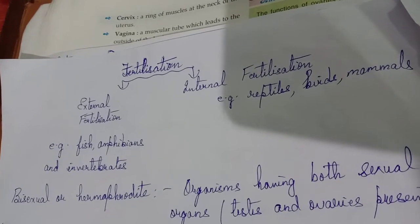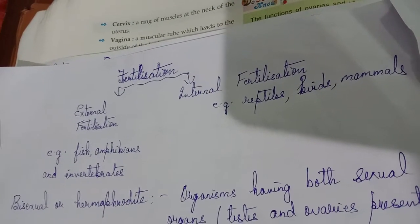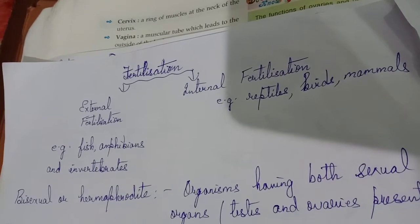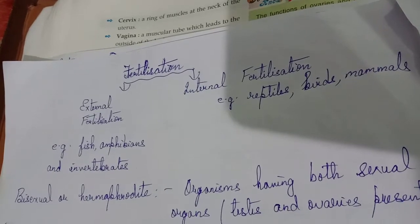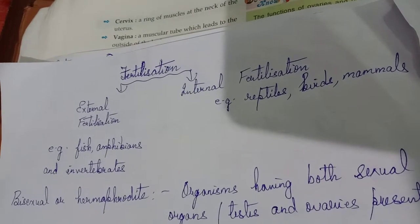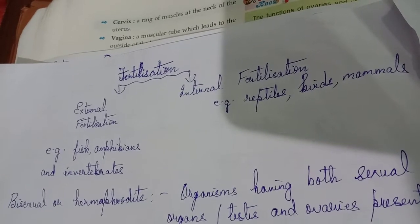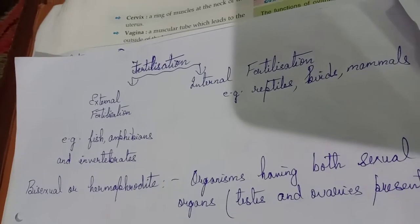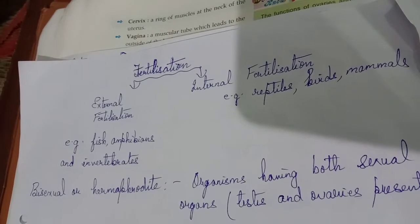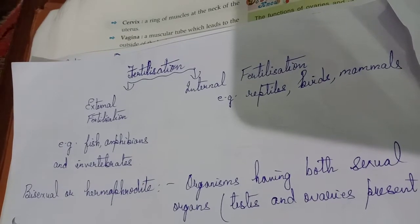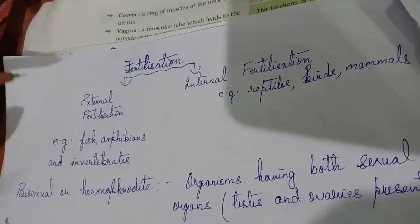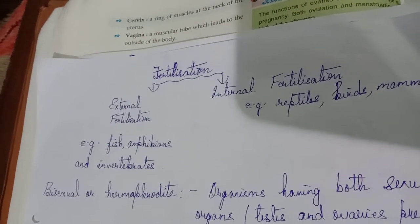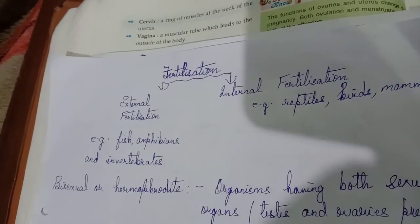For fertilization to occur, two distinct individuals are required. In external fertilization, the discharge of the male gamete — that is, the sperm — takes place outside the female body. The fusion of the male gamete (sperm) and the female gamete (ovum or egg) takes place outside the female body. This is called external fertilization, and it takes place in vertebrates such as fishes and amphibians.